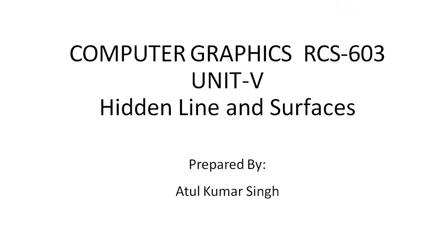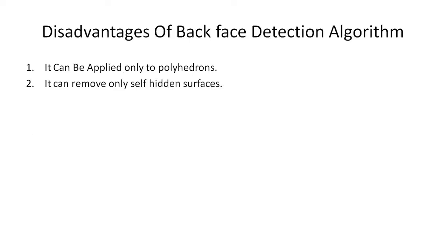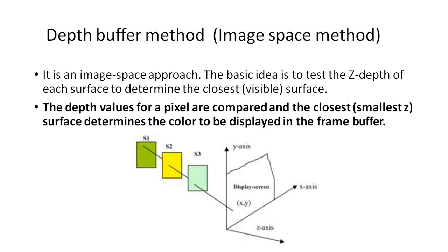Welcome to the second session of computer graphics on hidden lines and surfaces. In the previous lecture, we discussed the back-face detection algorithm. Back-face detection has some disadvantages: it can be applied only to polyhedrons, and it can remove only self-hidden surfaces. To overcome these disadvantages, a new algorithm has been created called the depth buffer method.